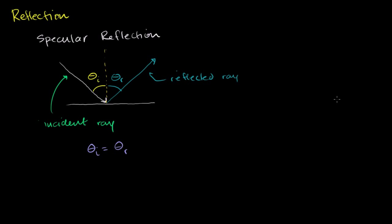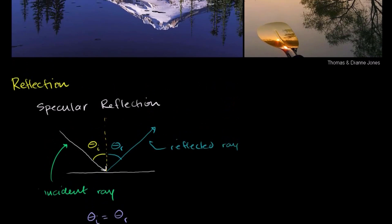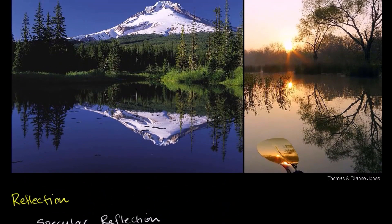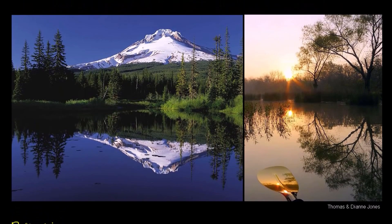Let me show you some images of specular reflection. You have light from the sun hitting this mountain, and we're going to talk about diffuse reflection — that's what's happening there. It's being reflected diffusely, which is why we don't see the actual image of the sun here; we just see white.